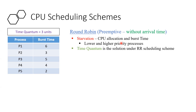As a solution, the round-robin scheduling scheme is defined. In round-robin, a defined time quantum is used. If any process completes within the time quantum, that's good. If it doesn't complete, then the processor will take it back and add it to the ready queue again, and the next process will be taken into the running state and executed.